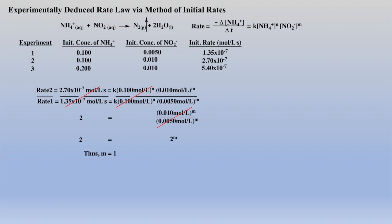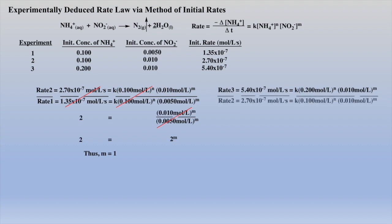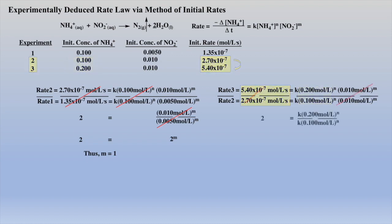Examining the data from experiment three and experiment two, we see that the concentration of nitrite was kept constant and the concentration of ammonium was doubled this time, which again had an effect on the initial rate. After some simplifications of this ratio, we see that N is equal to one, which is to say ammonium is first order within this reaction. We can now write our rate law with the order for each reactant. While this may not look like something important or even relevant, it will be very meaningful when hypothesizing a mechanism in later reviews.